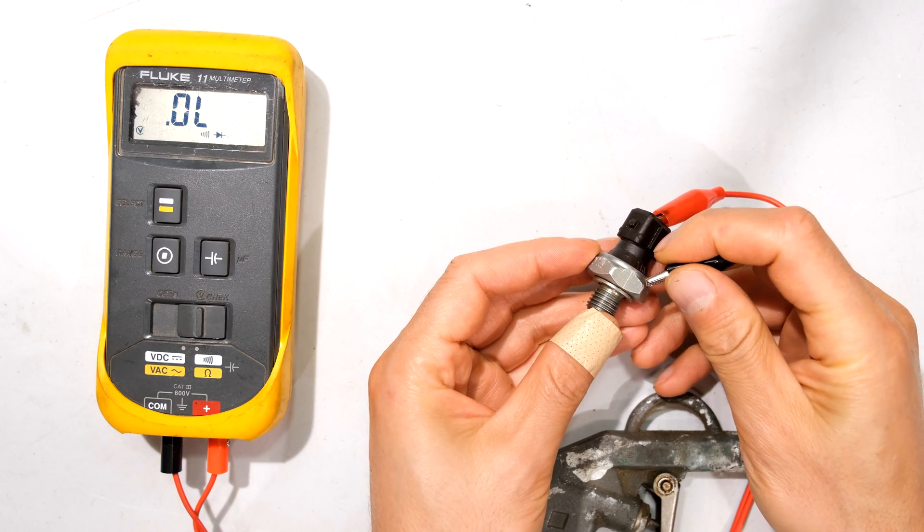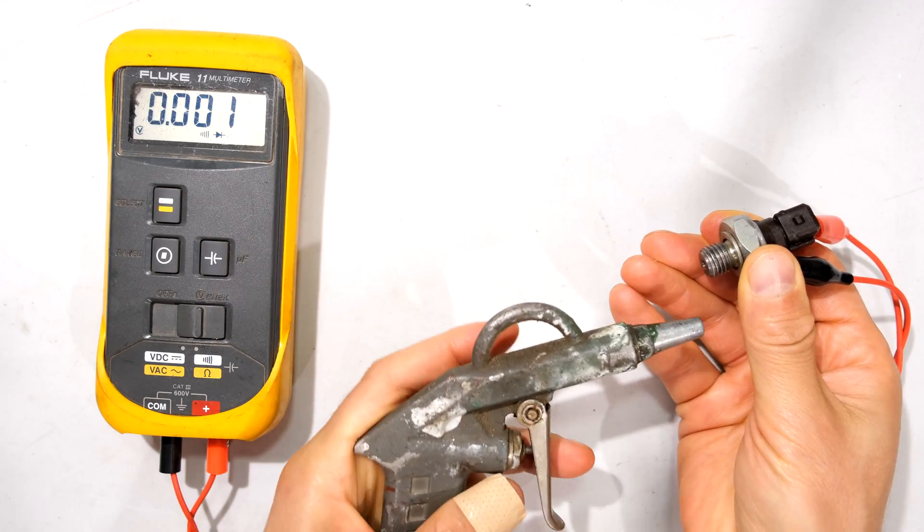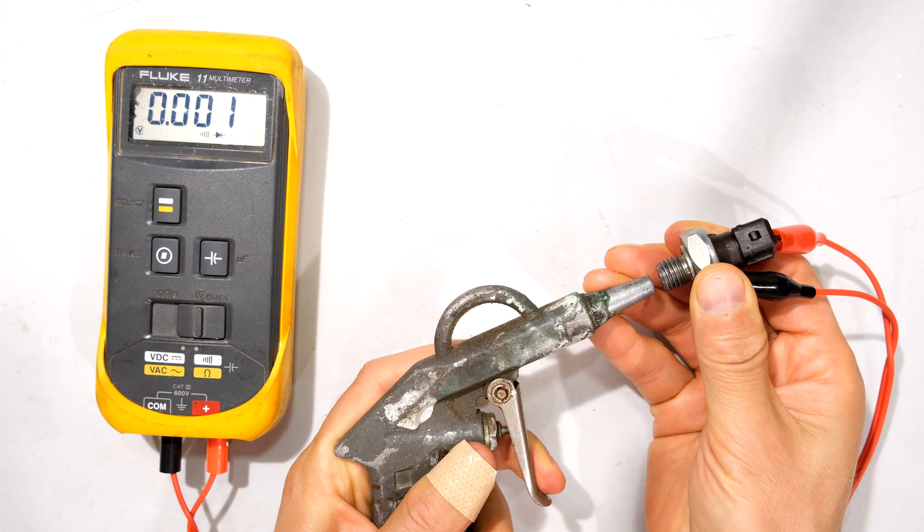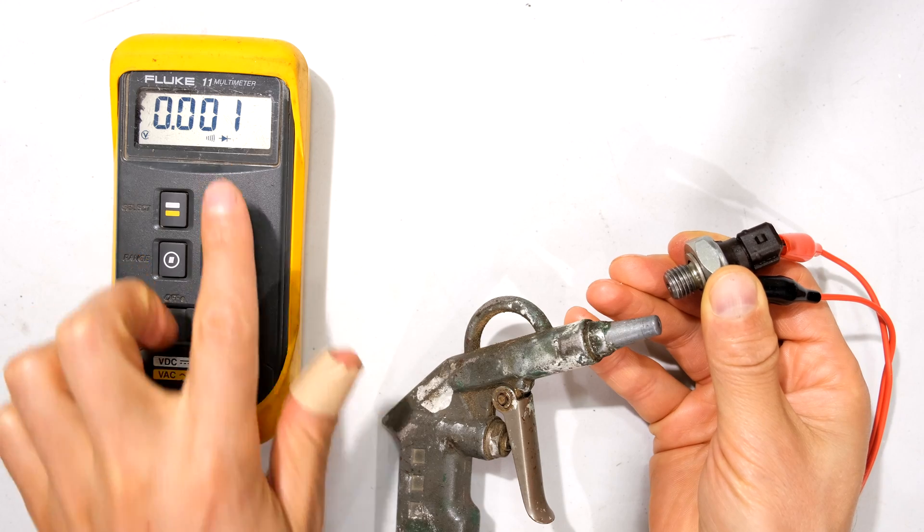Inside the switch is a diaphragm that is going to move and open the contacts as the pressure builds up. Right now the contacts are a dead short, you can hear it's a dead short, you can see on my meter and now I'm going to blow it with the compressed air.